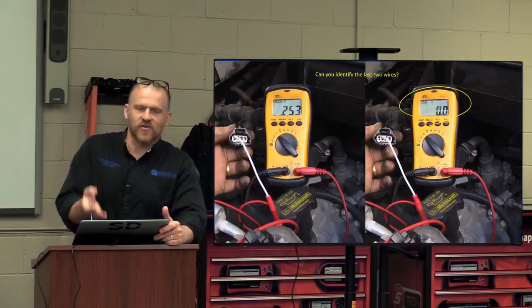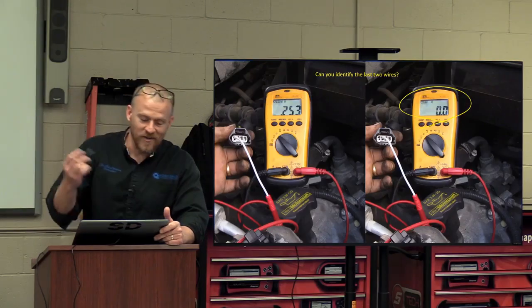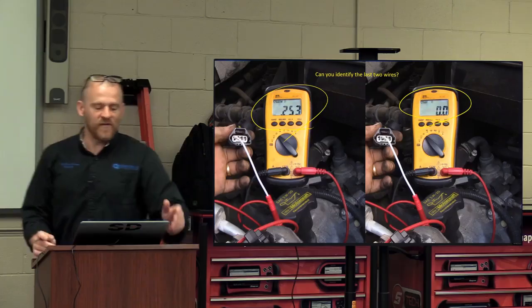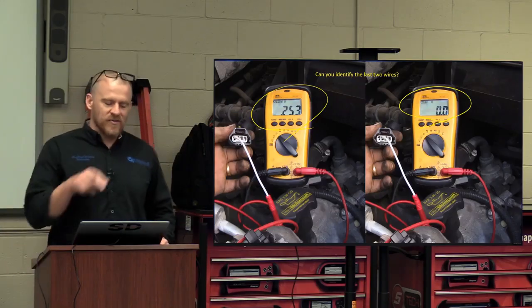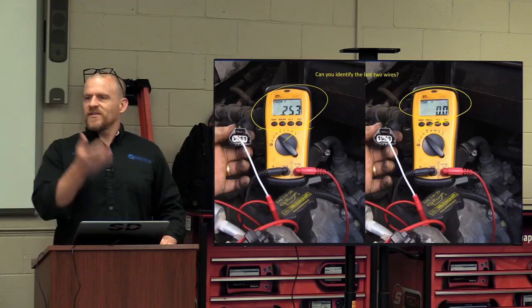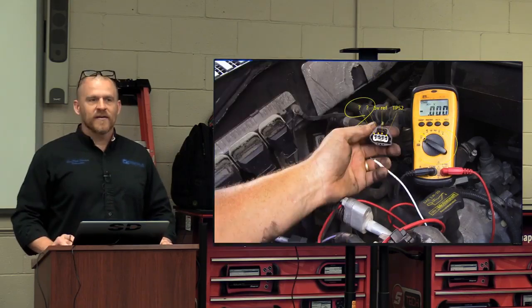So when I go to the sensor ground, it makes sense the sensor ground would be the same as battery ground. That's my sensor ground. What's this one reading 253,000 ohms? That's on a mega-ohm scale. That's my signal circuit. That's TPS1. Cool.